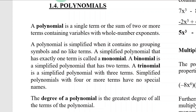A polynomial is simplified when it contains no grouping symbols and no like terms. A simplified polynomial that has exactly one term is called a monomial. A binomial is a simplified polynomial that has two terms. A trinomial is a simplified polynomial with three terms. A simplified polynomial with four or more terms has no special names.